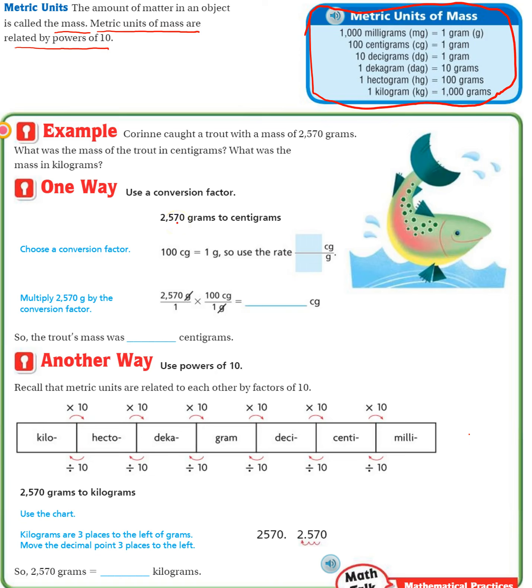One way is to use a conversion factor, just like we were using conversion factors for pounds and ounces. We can do the same thing with metric units. Kareem caught a trout with a mass of 2,570 grams. What was the mass of the trout in centigrams? What was the mass in kilograms? We're doing it twice here. We have two questions.